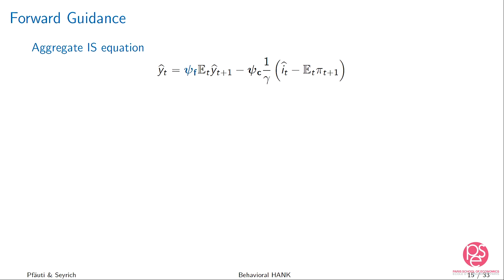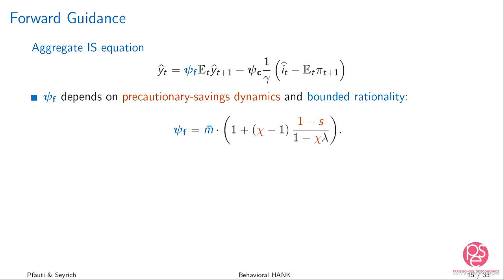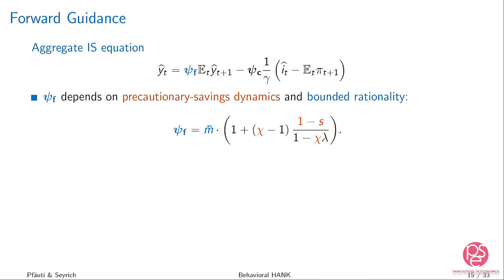Now for Psi_F, which depends on the interaction of the behavioral friction m-bar and the precautionary savings dynamics. The type-switching probability one minus s enters through the precautionary savings motive. Chi appears again because if you become hand-to-mouth, what matters is how exposed you'll be. In a standard tank model, this part would be zero. This brings us much closer quantitatively to the full model, which also has precautionary savings motives. The M bar didn't show up in Psi_C because, following Gabaix, agents are assumed to observe real interest rates perfectly — this is by assumption.